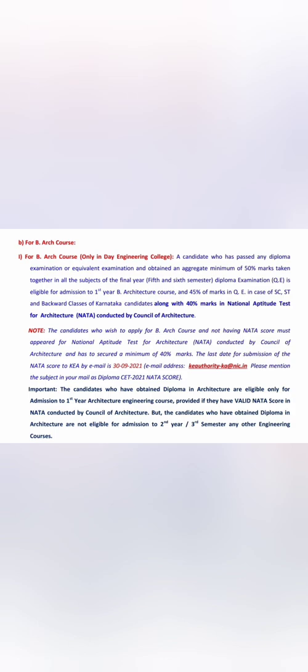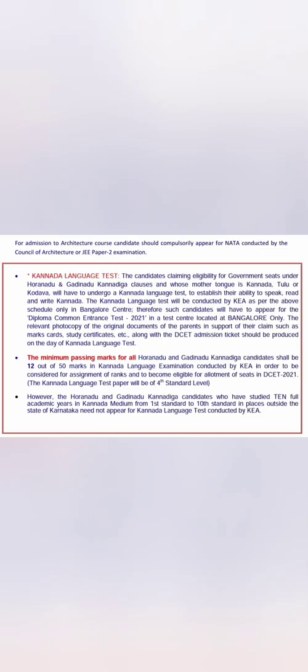For SC/ST category applying to B.Arch, the required percentage is five percent less, which comes to around 45 percent. Additionally, diploma Architecture students must also write the NATA — the National Aptitude Test for Architecture — conducted separately, and must score a minimum of 40 percent marks in NATA. So there are three criteria: 50 percent in the architectural diploma, writing the NATA exam, and securing 40 percent in NATA.